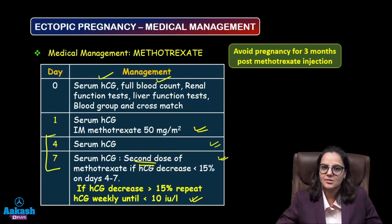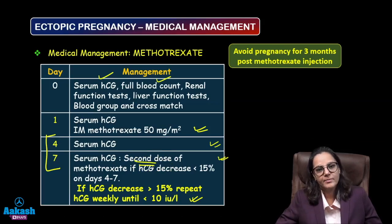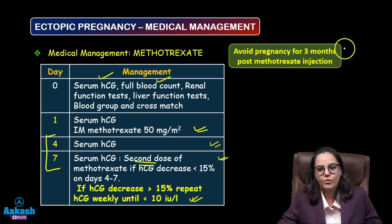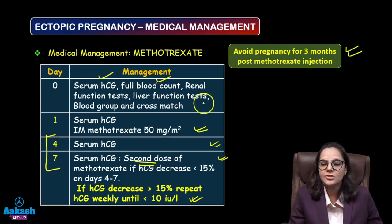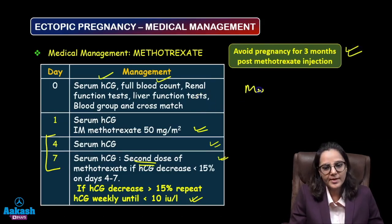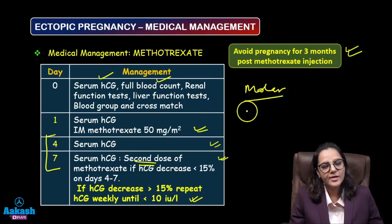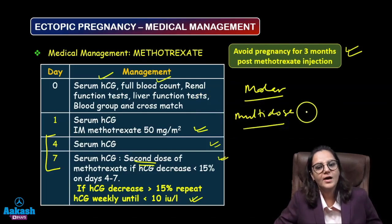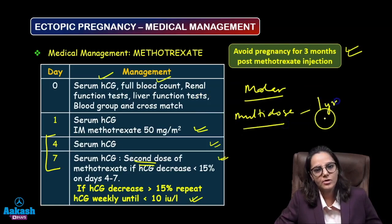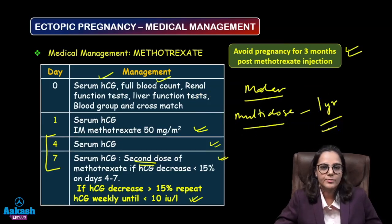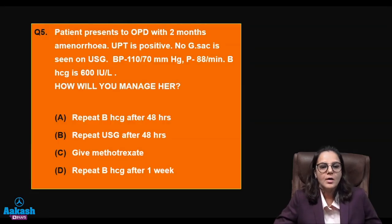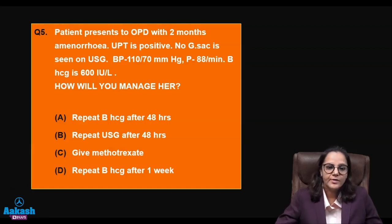You can also offer the patient the option to proceed with surgical management. An important point: after giving methotrexate for ectopic pregnancy, advise the patient to avoid pregnancy for three months. Also note that methotrexate is given for molar pregnancy in a multi-dose regimen, in which case the patient is advised to avoid conception for one year.